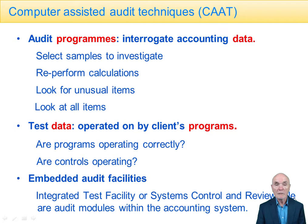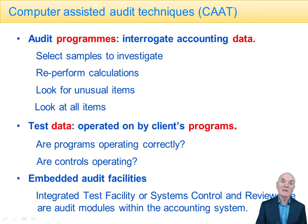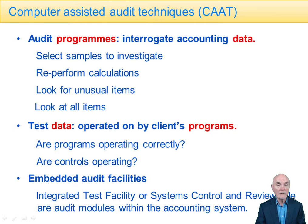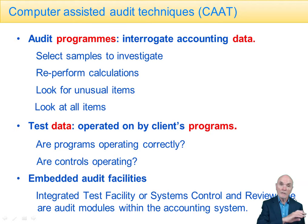An audit program is a program which belongs to the auditors. Essentially, it's a program which can be set up to read clients' data files. As it reads the client data files, you can set parameters within it — for example, to select samples for investigation. You could say, I want you to select every hundredth one, or do it more randomly. Or you could set it to stratify: I want 10 balances under 10,000, 20 balances between 10,000 and 50,000, and 10 balances over 50,000. It will go through and select the right number of balances in each of the strata.